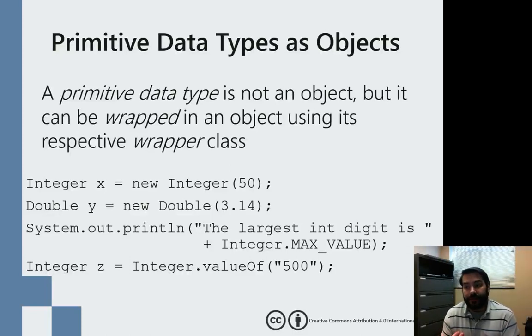So one of the things that we can work with in Java is something called a primitive data type. And we've learned about these.